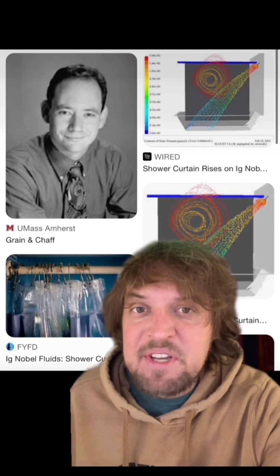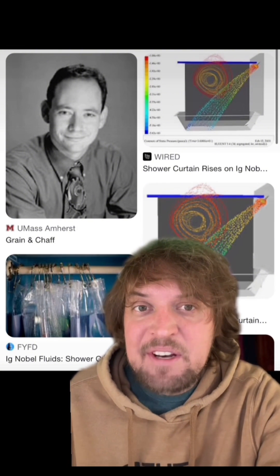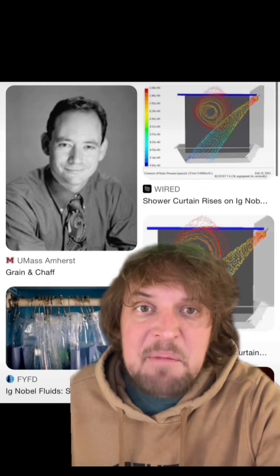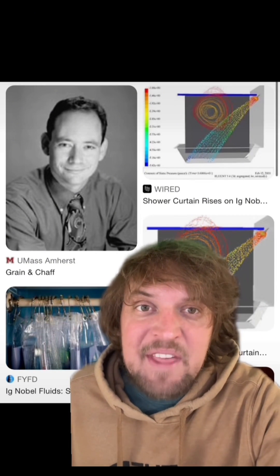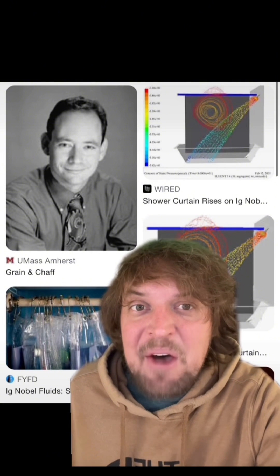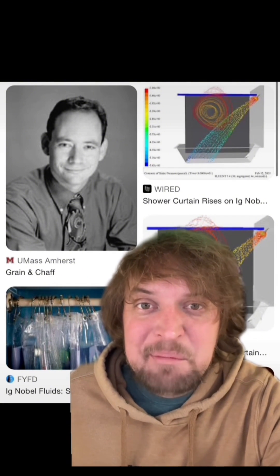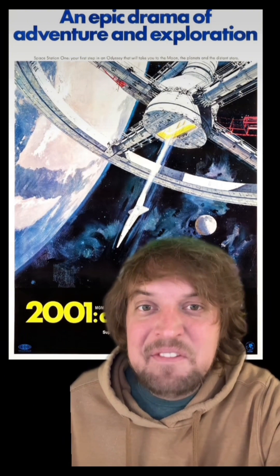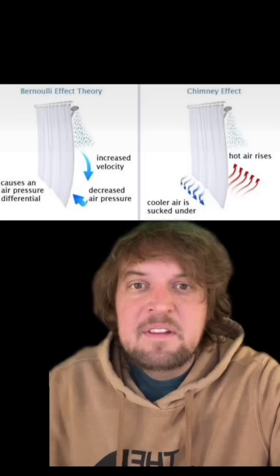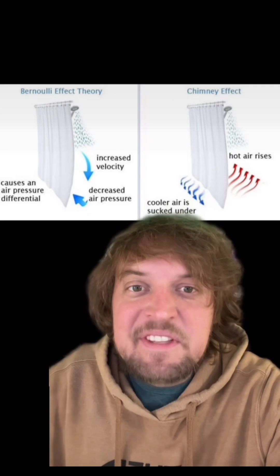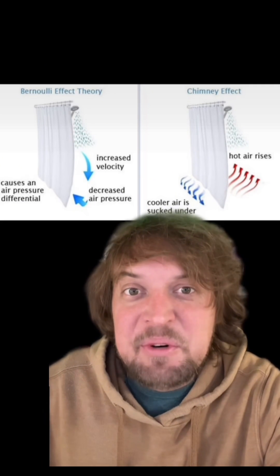In 2001, David Schmidt of the University of Amherst created another explanation using computer simulations. He modeled a typical shower, dividing the space into 50,000 little cells, and ran the simulation on his home computer in the evenings and weekends — basically whenever his wife wasn't using it. After two weeks, his computer had generated just 30 seconds of simulated shower runtime. The simulation showed it wasn't the Bernoulli effect or the chimney effect drawing the curtain in.